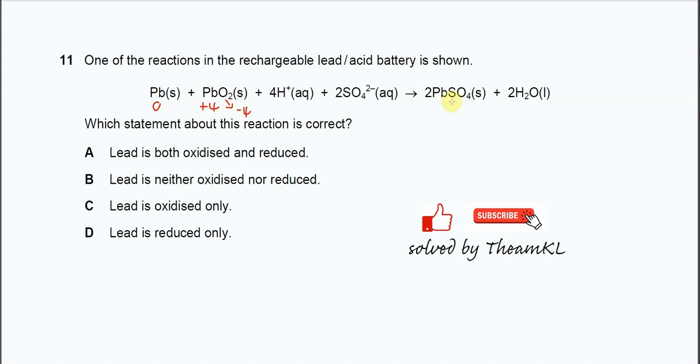So on the product side, this is the lead sulfate. So sulfate itself is negative 2. And this one therefore is positive 2. So for this one, we know that the lead is from 0 to positive 2.